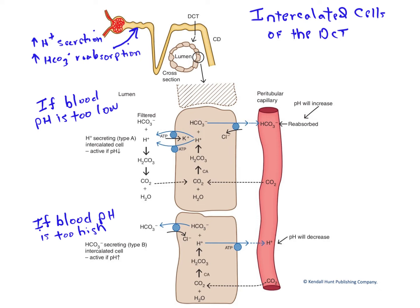There are two kinds of these cells: type A, or proton-secreting cells, and type B, or bicarbonate-secreting cells.